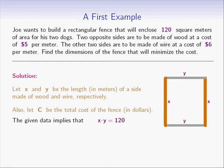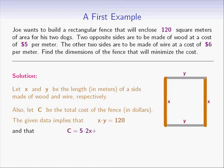Let x and y be the length in meters of a side made of wood and wire respectively. Also, let c be the total cost of the fence in dollars. The given data implies that x times y equals 120, since the area enclosed by the fence is 120 square meters. We can also write an expression for the cost: two sides made of wood each of length x at $5 per meter gives a wood cost of 5 times 2x. Similarly, the total cost of wire is 6 times 2y. So we get that c equals 10x plus 12y.